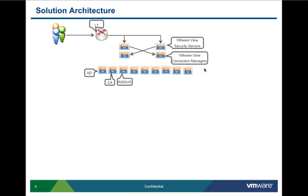If you do not anticipate any outside connections, you can ignore the RADIUS component. There are many vendors who provide RADIUS servers, like RSA and SafeNet. For our design we used a Microsoft RADIUS server. The validated design guide published for this solution has detailed instructions on configuring the RADIUS server — the link to that document is provided at the end of the session.